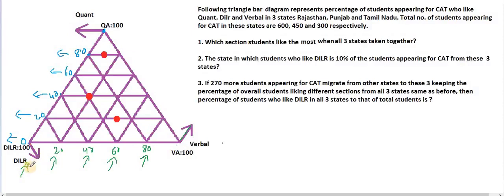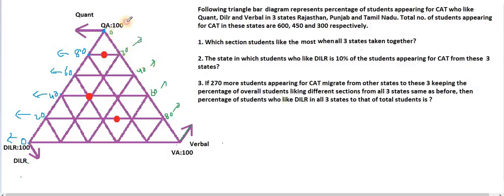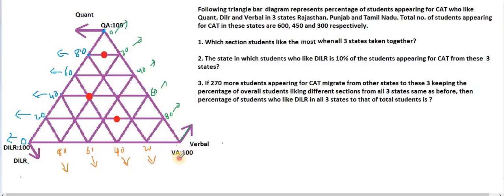Because for DILR I can't represent on this side, what I will do is represent verbal on this side instead. So I deleted verbal from the previous side and I am going to represent it on this side — this is 80, this is 60, this is 40, this is 20, and this is zero. The complete line is the same; it doesn't matter whether I represent it here or here, both are the same. I did it so that I can get space here for DILR, because DILR is going like this.